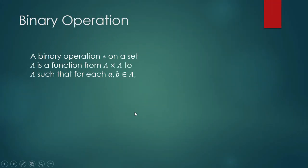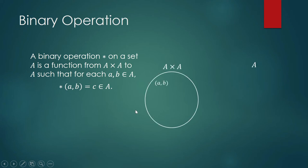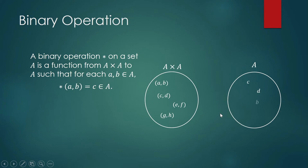A binary operation star on a set A is a function from A cross A to A, such that for each a, b element of A, star of (a, b) is equal to c. The binary in 'binary operation' refers to the pair a, b — the elements of your cross product, which is an ordered pair. That is what is binary in the binary operation.